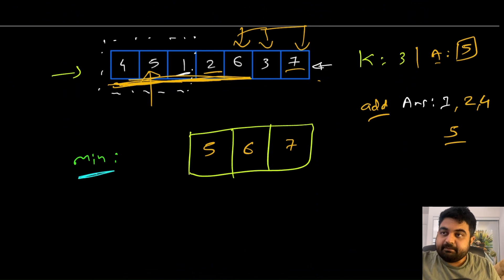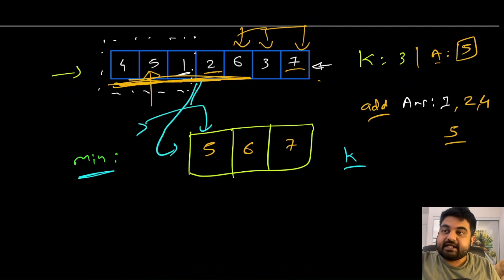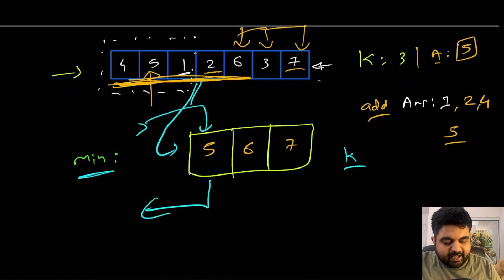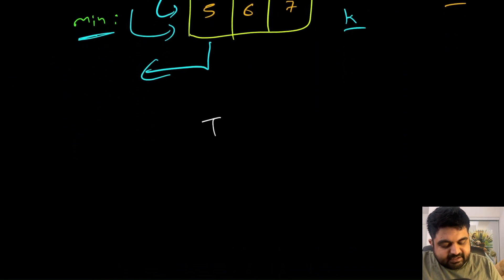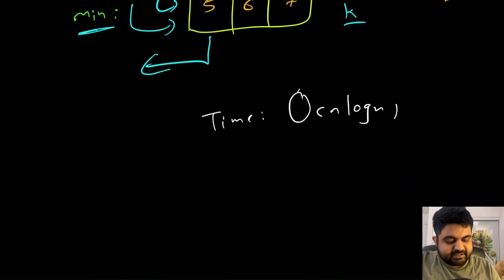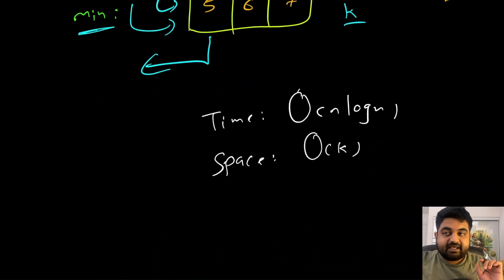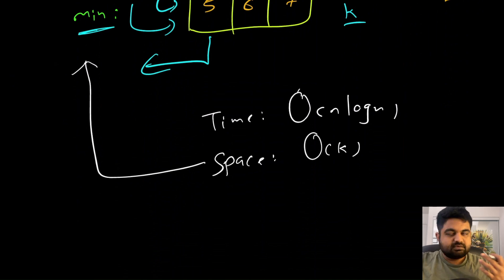By using a min heap of size k, if the value being added is greater than the heap's first element, we kick that element out and insert the new value. The time complexity is O(n log n) since every element must be inserted into the heap, and the space complexity is O(k) since we initialize a min heap of size k. Note that a min heap is also known as a priority queue.